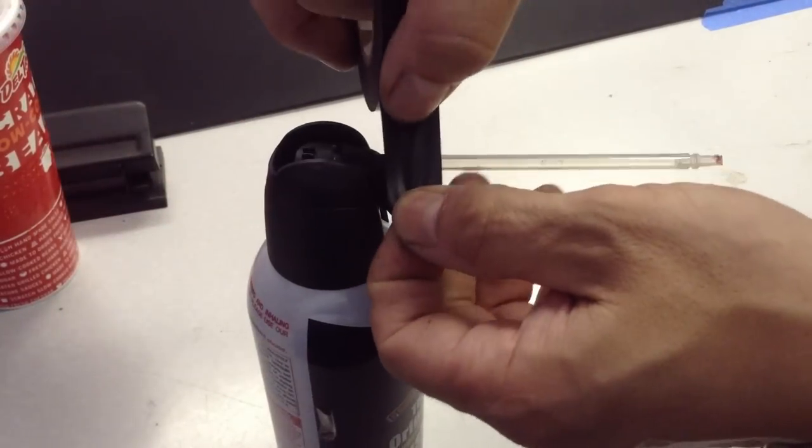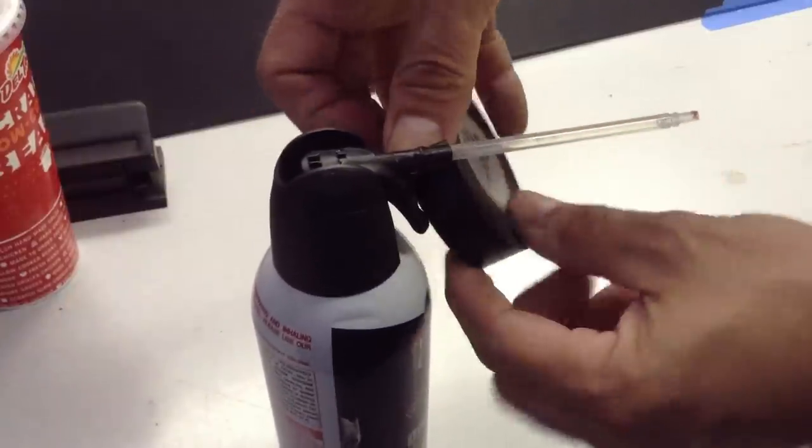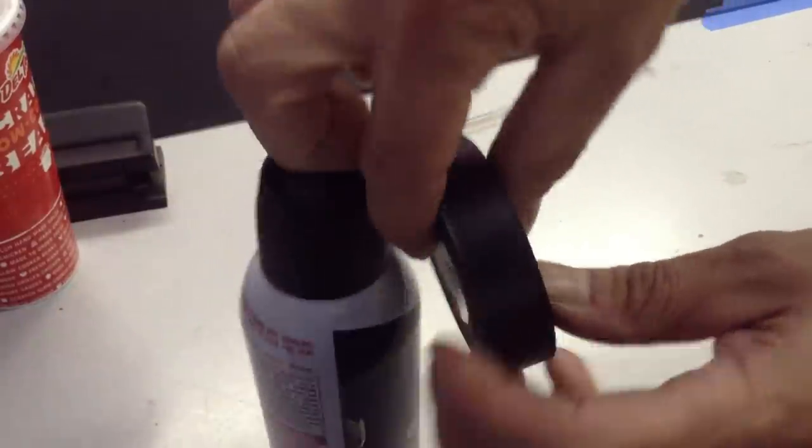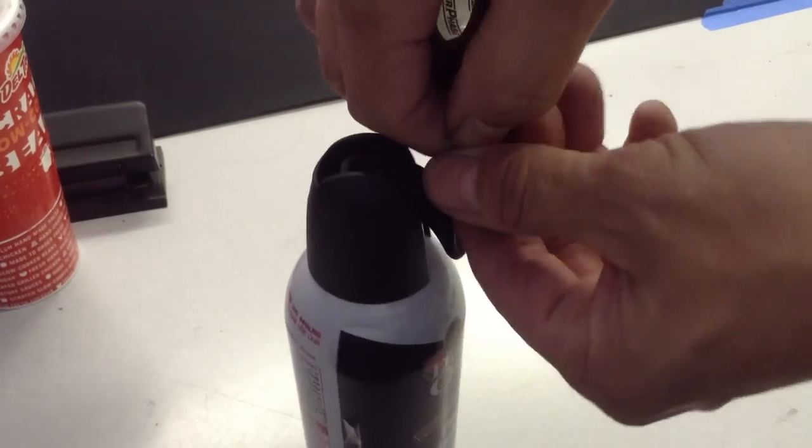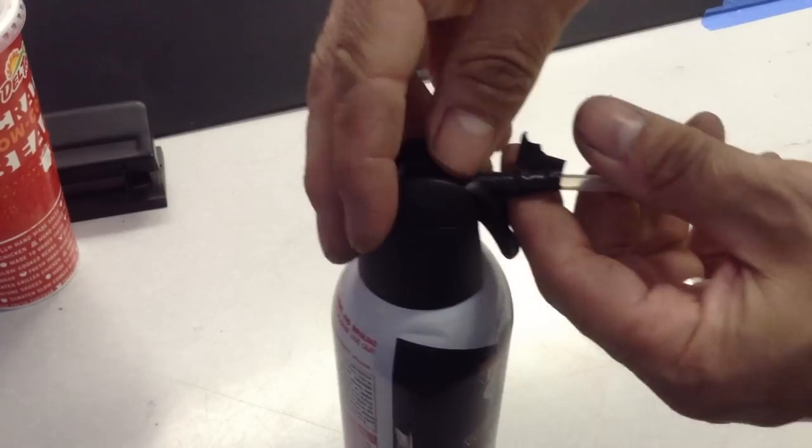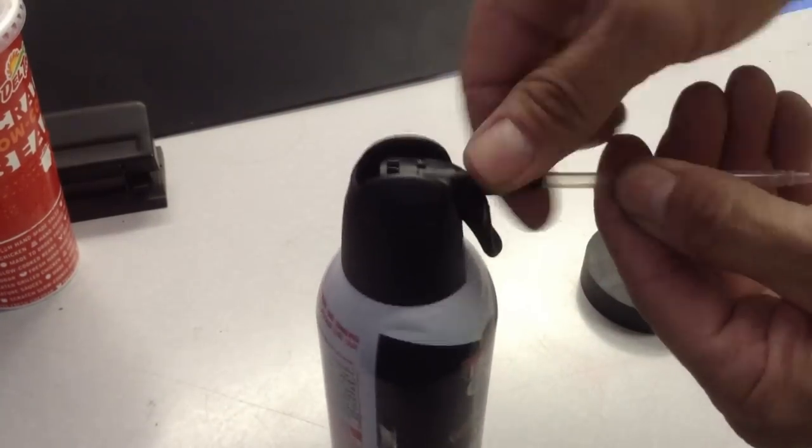Once you've got that straw connected, use electrical tape to secure those two pieces together. You want that tape on there pretty tight so you don't get any air escaping.